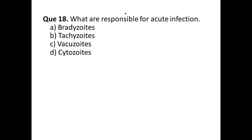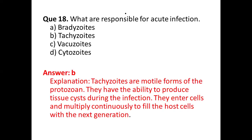Question number eighteen: what is responsible for acute infection? Options are: (a) bradyzoites, (b) tachyzoites, (c) vacuozoites, (d) cytozoites. The correct answer is option (b) tachyzoites. Tachyzoites are motile forms of protozoa; they have the ability to produce tissue cysts during infection, entering cells and multiplying continually to fill the whole cell with the next generation. This is associated with Toxoplasma infection.